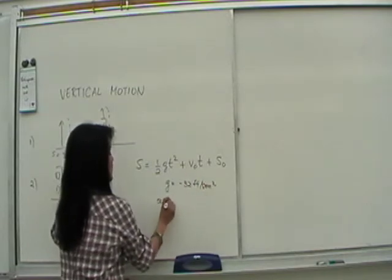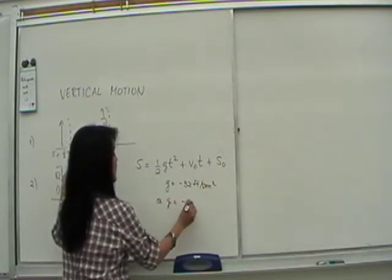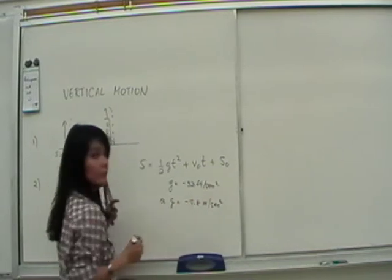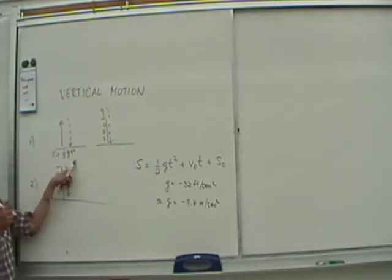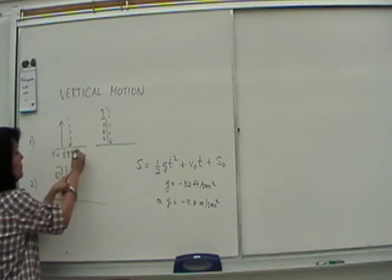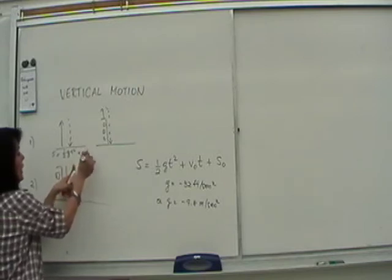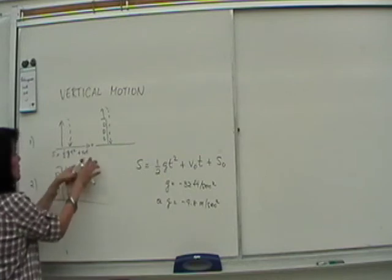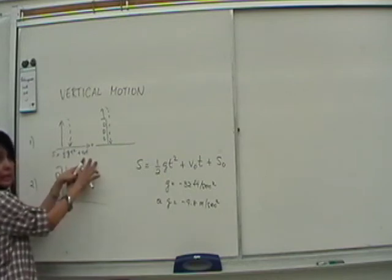Or if you're doing metric system, then it's negative 9.8 meters per second squared. So you plug the g in here, plus whatever initial velocity you impart, and now here because you're on the ground, S is 0, so there's no S. So you're done here.